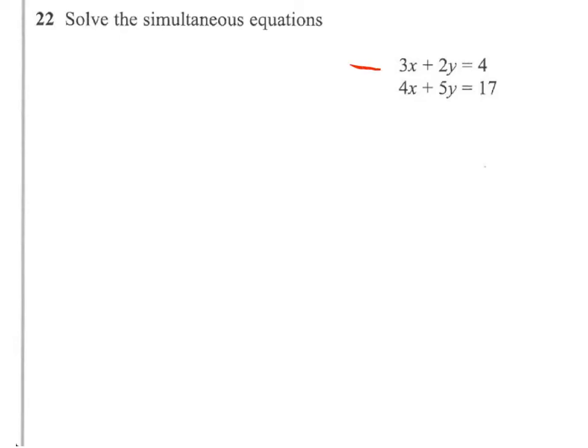If I multiply the top equation by 4, I'll end up with 12x plus 8y equals 16. Each term has been multiplied by 4.